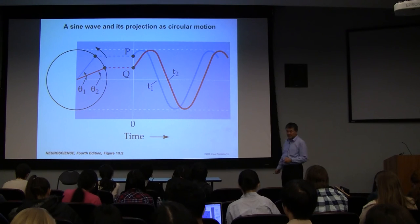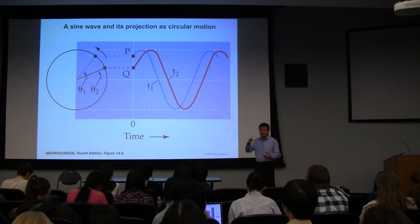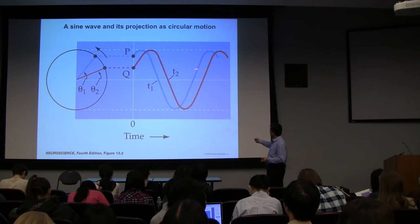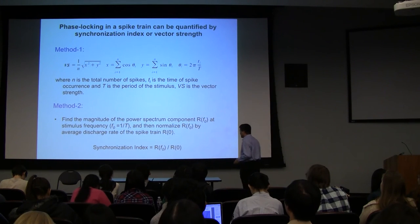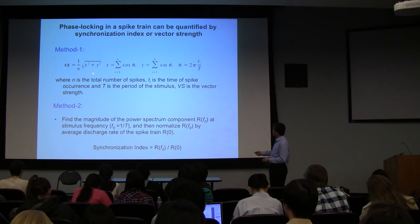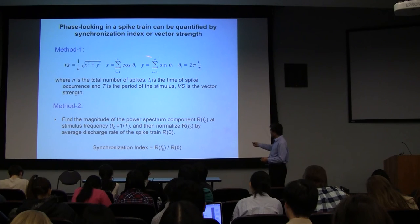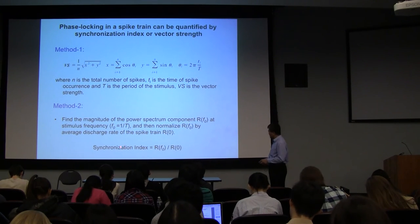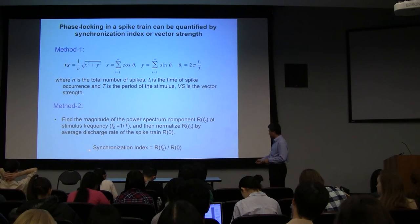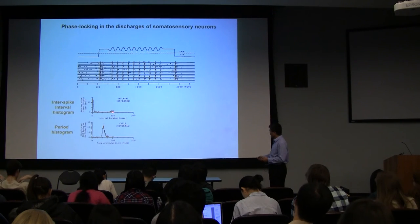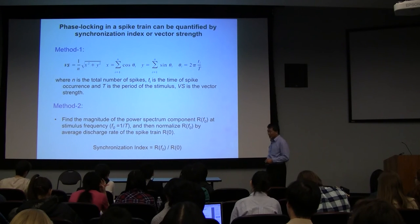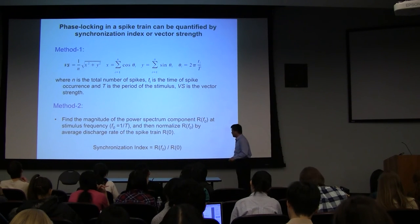Another way to think about quantification of phase locking: phase locking is essentially about locking to one cycle. When you have a sinusoid, you have 360 degrees. You can plot this as circular statistics — that's how you calculate it. I'll give you two formulas without proving them. One is based on circular statistics, which you can compute by hand reasonably easily. Another way is to use FFT to calculate the spectrum and then compute the synchronization index — the energy at frequency F0. This is the amplitude at F0, and if you apply either one you can calculate phase locking.